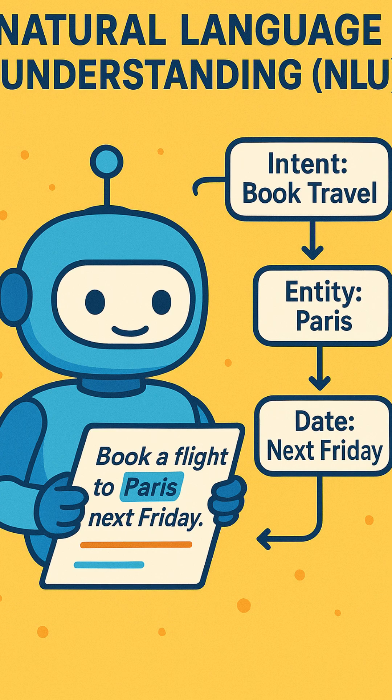Next is natural language understanding. It is a subfield of NLP that focuses on helping computers understand the meaning behind the text or speech. It tries to answer questions like: what is the user asking, what is the intent, what entities are mentioned? For example, when you type 'book a flight ticket to Paris next day,' NLU figures out that you want to book travel, that the destination is Paris, and the date is next day. It's all about comprehension.